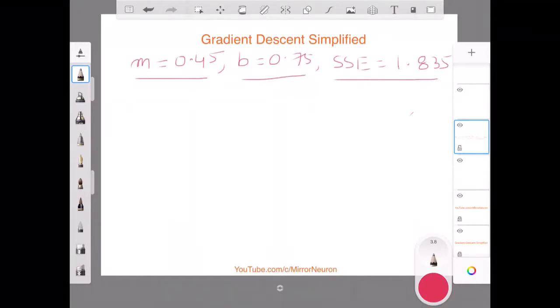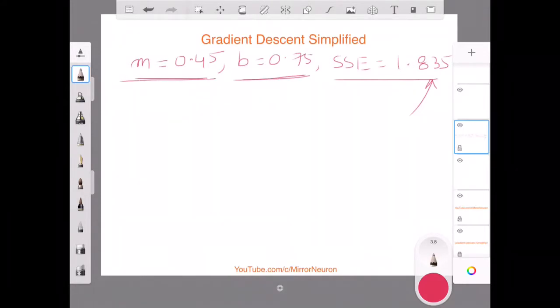Now my main intention is to reduce this error. So for that, I have to try a new value of m and a new value of b. But the question is, how do I decide? Should I increase or should I decrease my values for m and b?